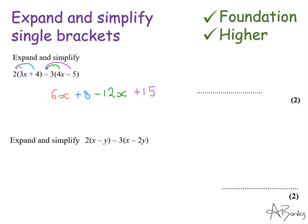So last step I've got to collect my terms together so I have a 6x and a minus 12x so that's actually minus 6x and then with my numbers I have an 8 and a plus 15 so all together that is plus 23.